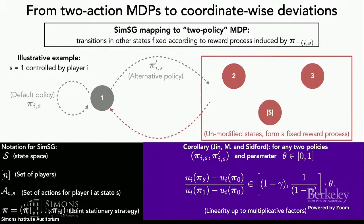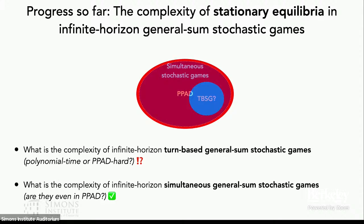If we fix the other players and states and consider two candidate policies varying only at one state, this can be mapped to a two-action MDP. As a direct corollary, we get the pseudo-linear property. To summarize the progress: the problem of simultaneous stochastic game Nash equilibrium computation is not only PPAD hard, it is also in PPAD. This brings us to the next question: given all the special structure in turn-based stochastic games, does stationary equilibrium computation remain PPAD hard, or does it become polynomial time?